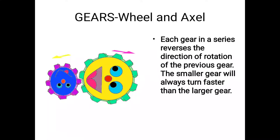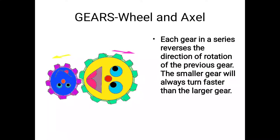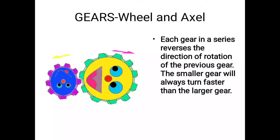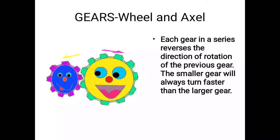Each gear in a series reverses the direction of rotation of the previous gear. Smaller gear will always turn faster than the larger gear. You see their movement and speed of both gears. Comparing speed, the larger gear rotates slower than the smaller gear because of number of teeth and diameter.